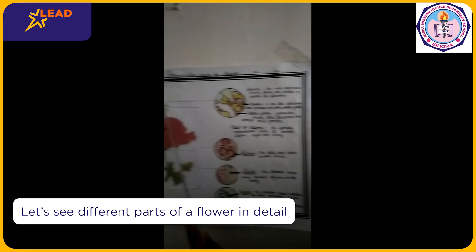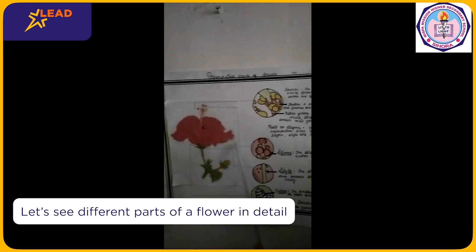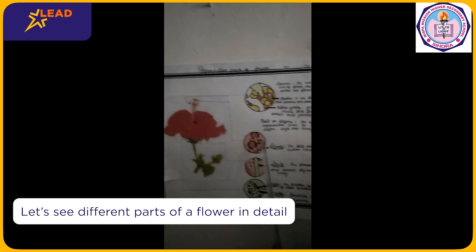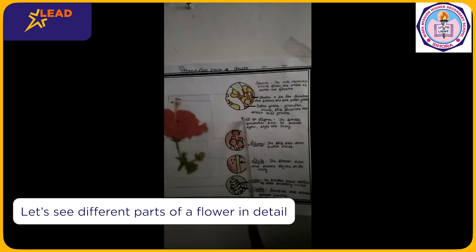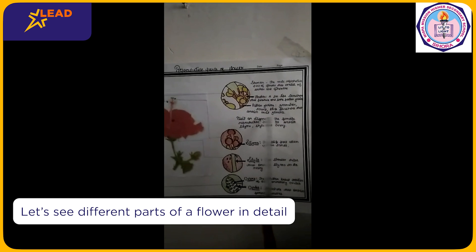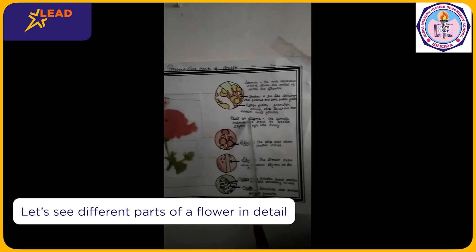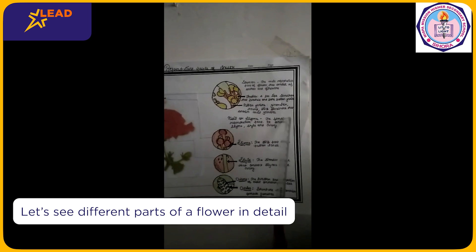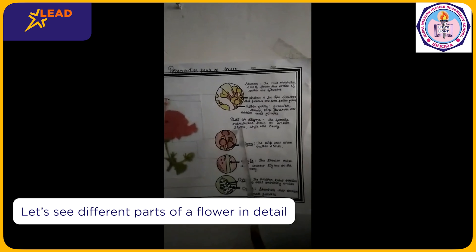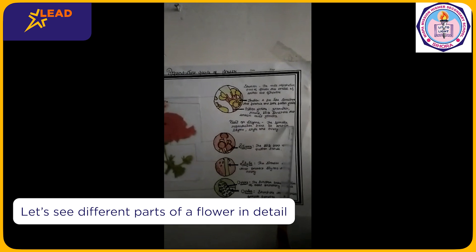And this three-part structure is called the pistil. The female reproductive part contains three parts: stigma, style, and ovary.